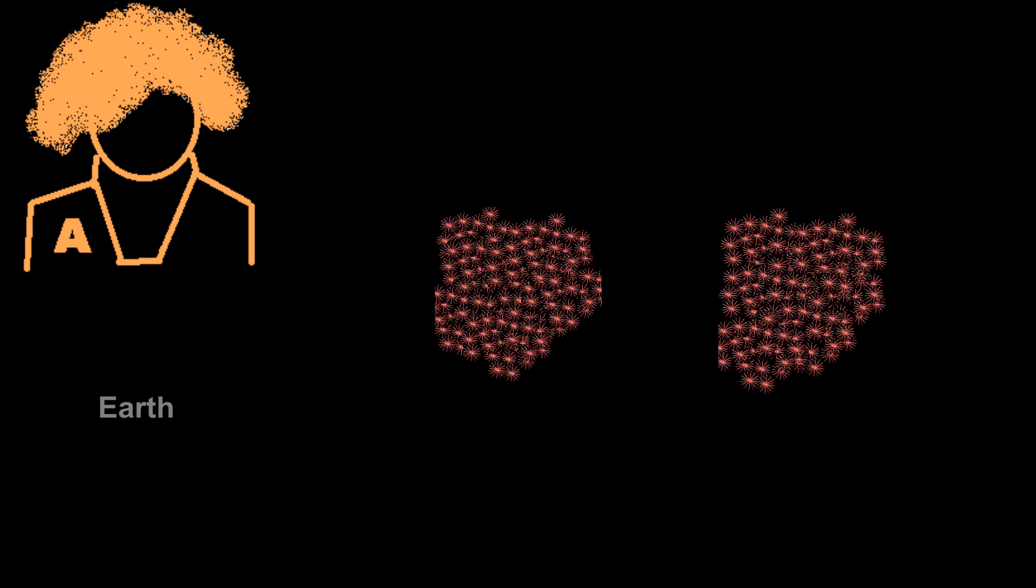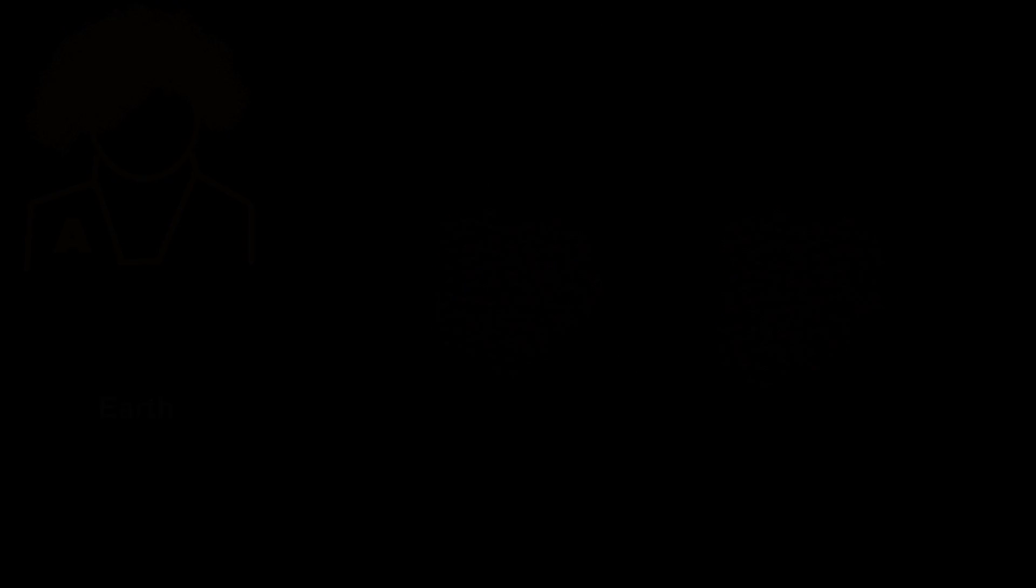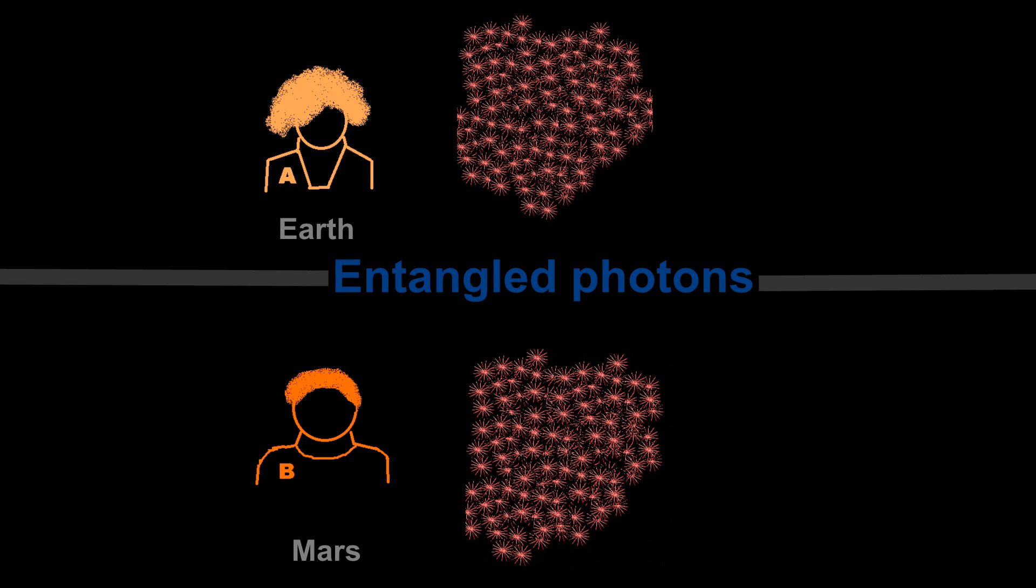Then Alice has planned different idea. She creates 1000 entangled pair of photons and separate each pair and send each one of 1000 pair to Bob. Now both are having 1000 photons. Remember, Alice and Bob's photons are now entangled.